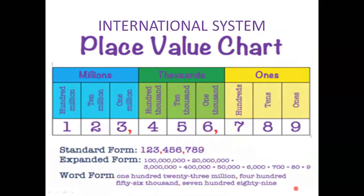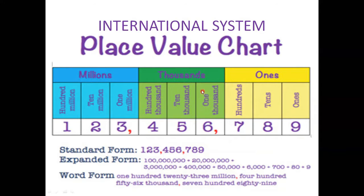Next is the international place value chart. Starting from the right: ones, tens, hundreds — these three are in the ones period. Then one thousand, ten thousand, hundred thousand — these three place values are in the thousands period.